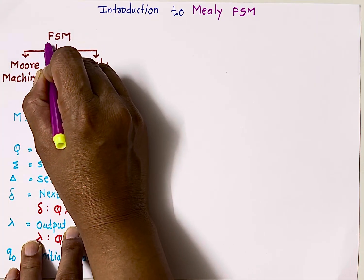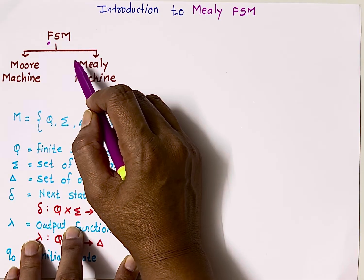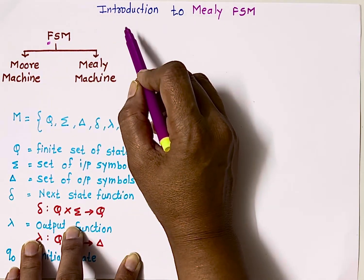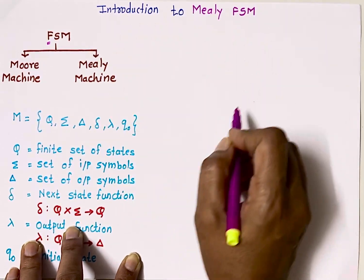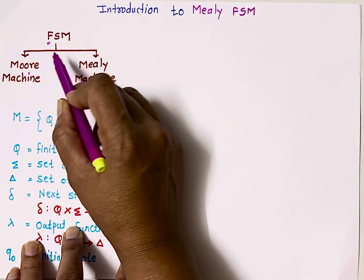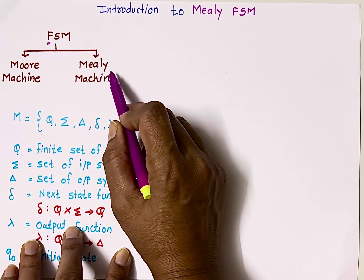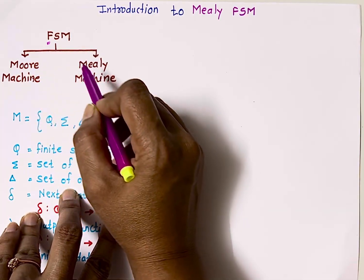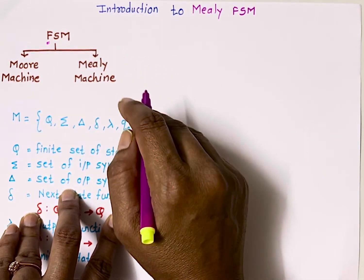The word 'finite' indicates the circuit has a finite number of states, meaning its outputs are limited or it goes through a limited number of states. FSMs are divided into two types: Moore machine and Mealy machine.